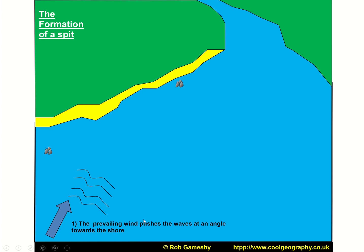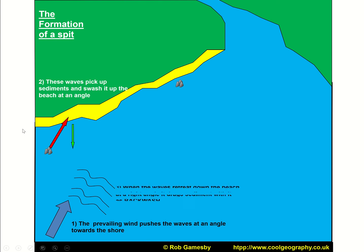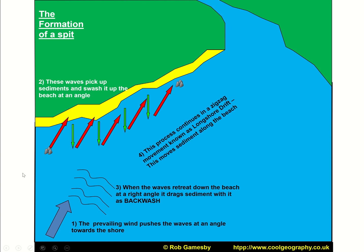In terms of spit formation, the prevailing wind pushes waves at an angle towards the shore — it's the wind blowing over the ocean surface that sets up wave direction. That picks up sediment and swashes it up the beach at an angle, then it backwashes back down the beach at roughly a right angle. That process continues along the beach, and that zigzag motion is known as longshore drift, which moves sediment along the beach.